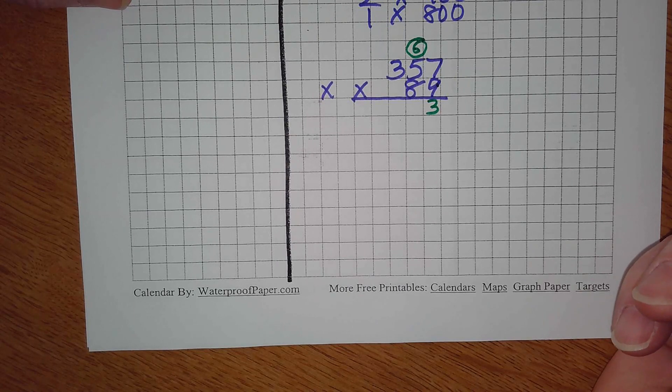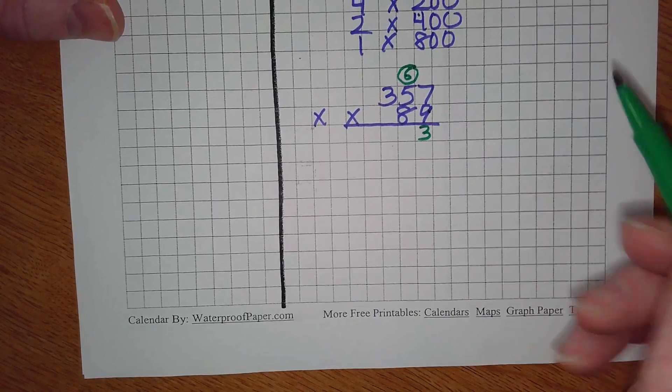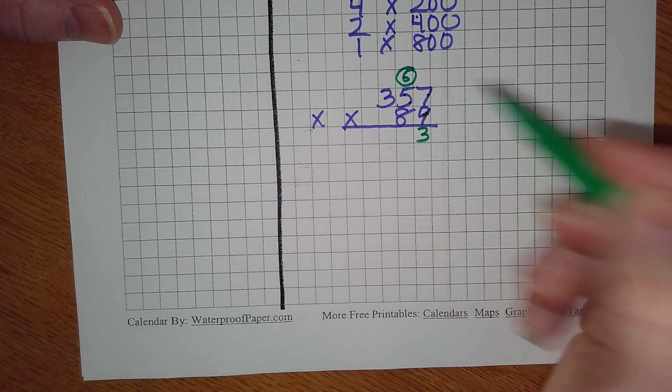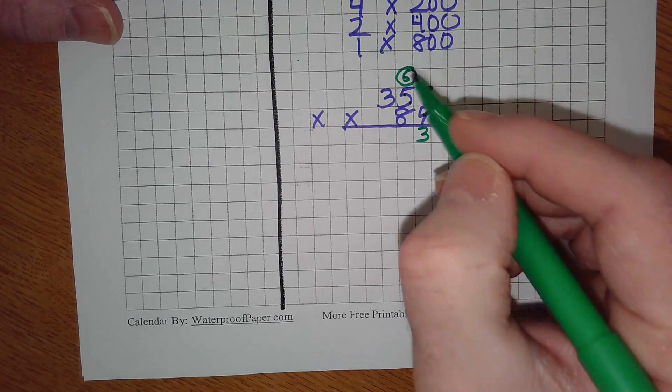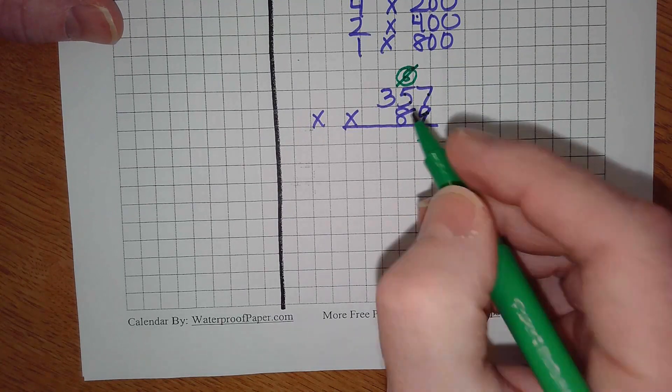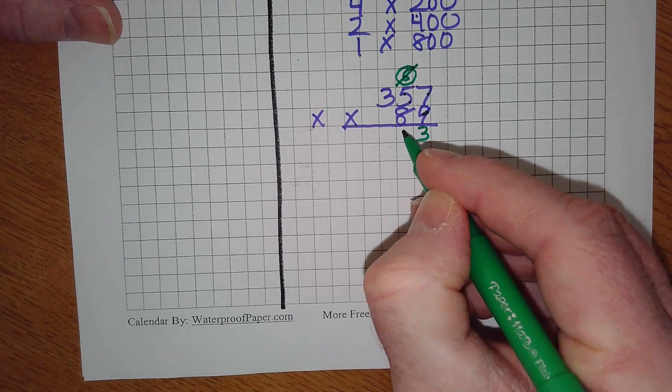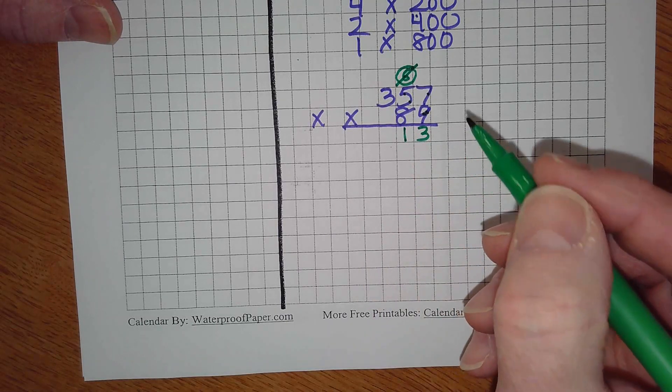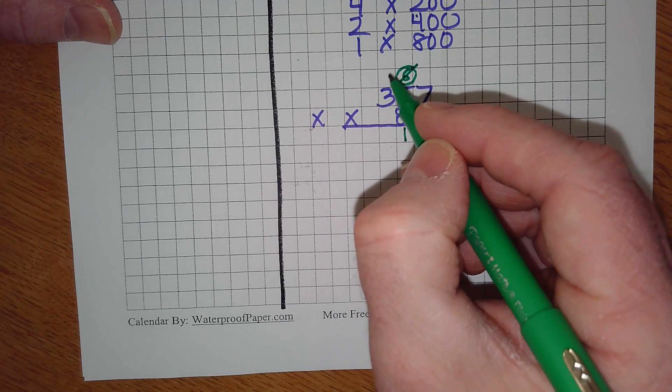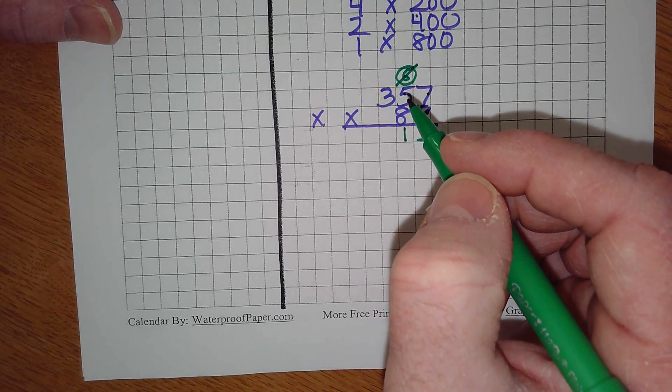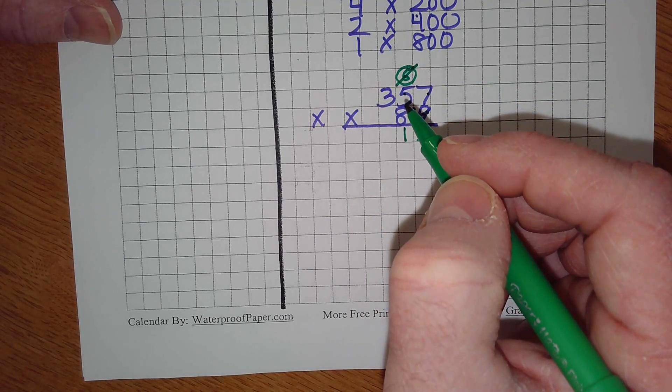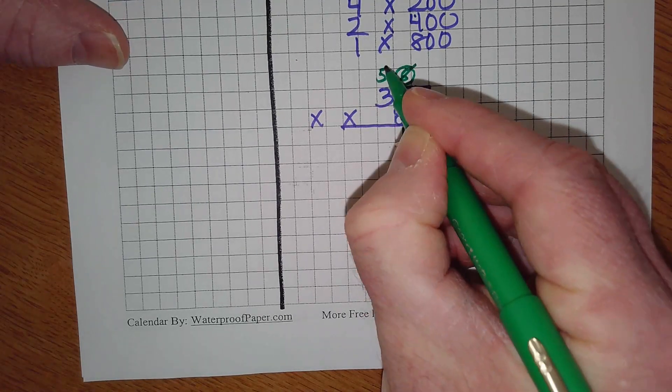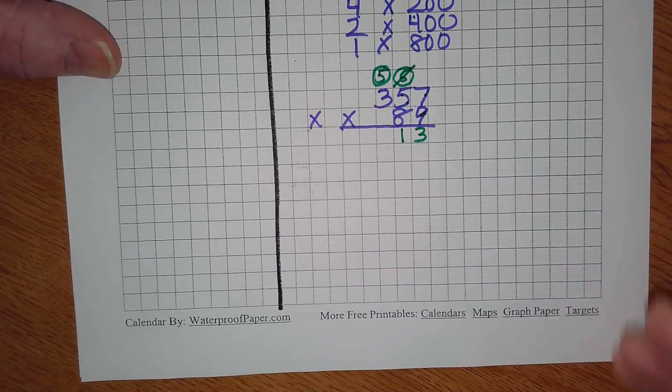Then what, Sam? Next step, Aubrey. 9 times 5, because we just did the 9 times 7. 9 times 5, Aubrey, is 45, plus 6, and cross it off, is what? 51. One goes below. Where do we put our 5? What happens? Regroup it above the hundreds place. It's not always going to be a 3, it's always going to be the hundreds place.